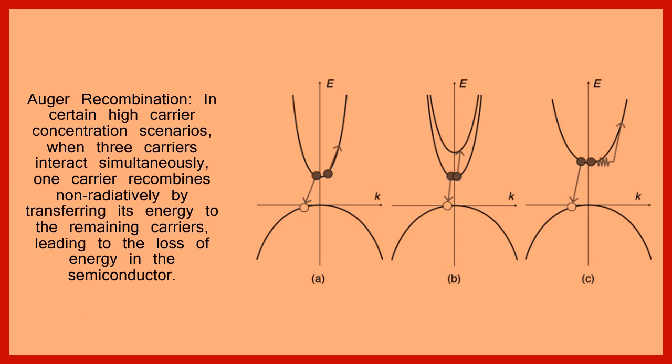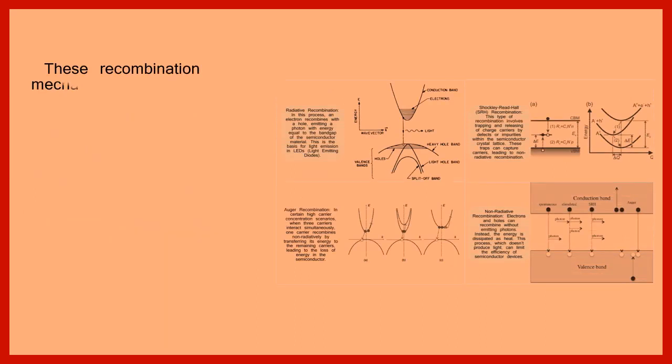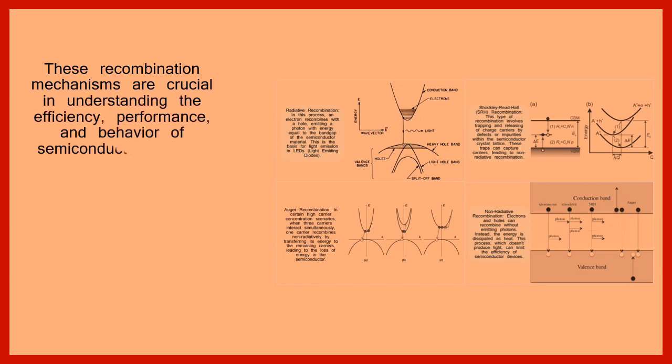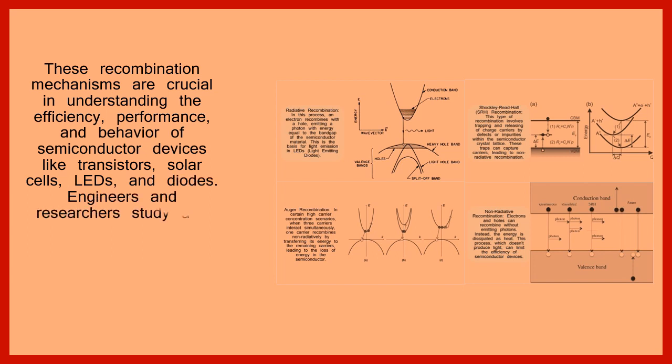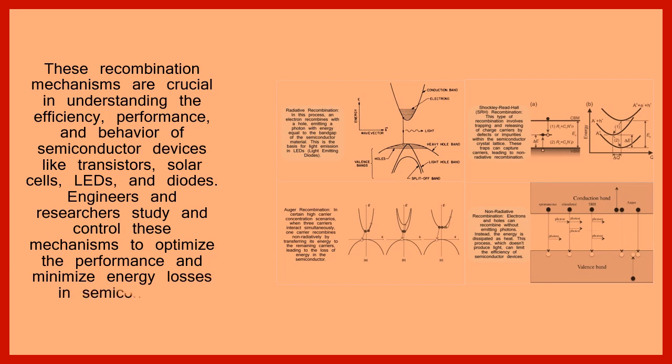leading to the loss of energy in the semiconductor. These recombination mechanisms are crucial in understanding the efficiency, performance, and behavior of semiconductor devices like transistors, solar cells, LEDs, and diodes. Engineers and researchers study and control these mechanisms to optimize the performance and minimize energy losses in semiconductor devices.